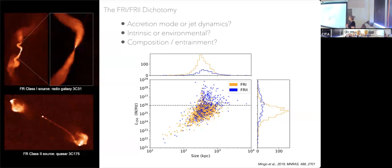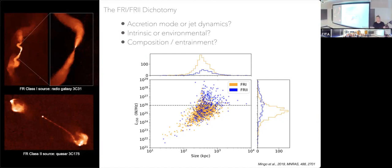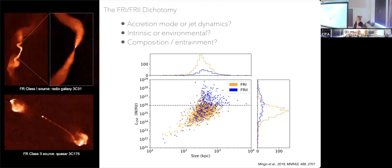The picture is becoming more complicated. This is data from the LOFAR telescope — we no longer see a clear luminosity distinction. We don't just have FR2s up here and FR1s down here; we have an overlap region. And even more importantly, there are some very low-luminosity FR2-type sources that are very difficult to explain. Understanding these radio galaxies is really key to understanding the evolution of galaxies beyond their host.